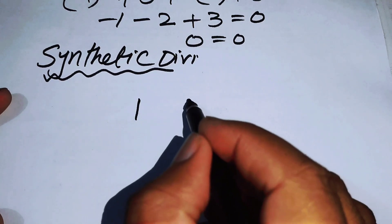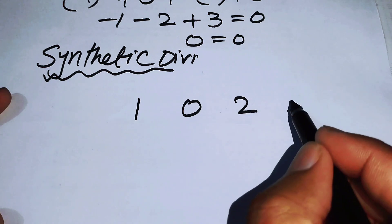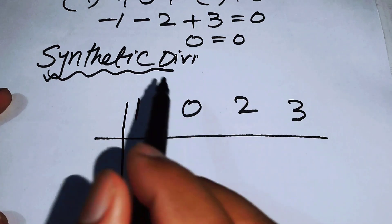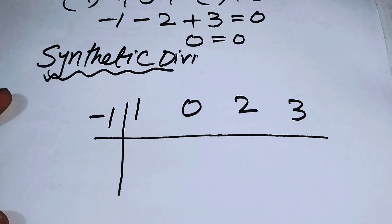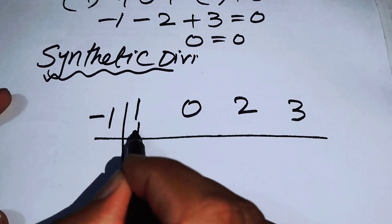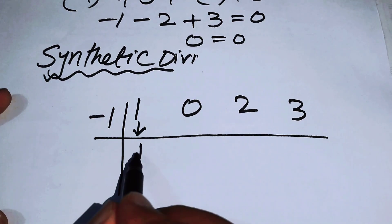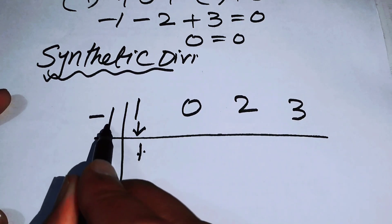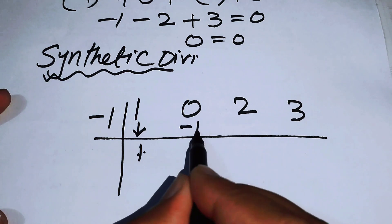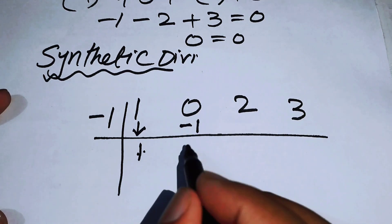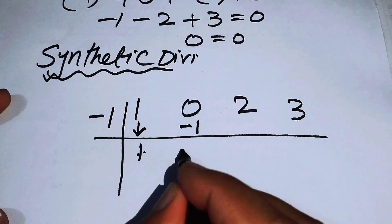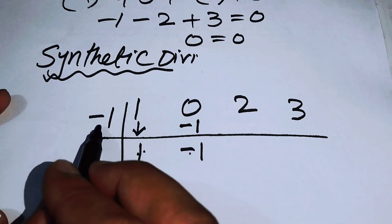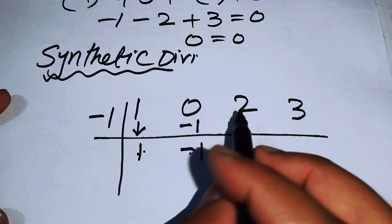The coefficients are 1, 0, 2, and 3, and the root we are using is minus 1. We write down the leading coefficient 1 as it is. Then we multiply 1 by minus 1 to get minus 1, and add to the next coefficient: 0 plus minus 1 is minus 1.